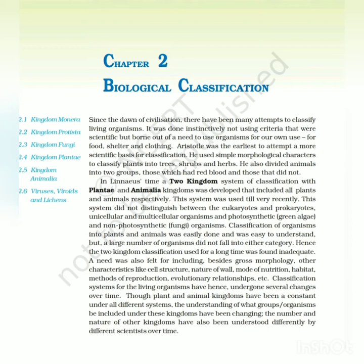Classification of organisms into plants and animals was easily done and easy to understand, but a large number of organisms did not fall into either category. The need was also felt for including, besides gross morphology, other characteristics like cell structure, nature of wall, mode of nutrition, habitat, methods of reproduction, and evolutionary relationships.